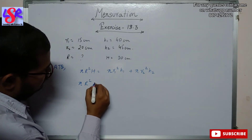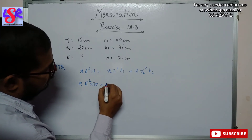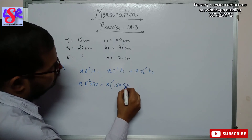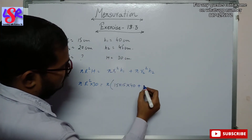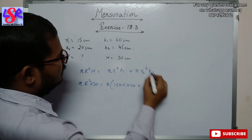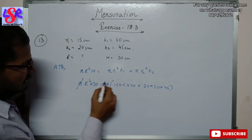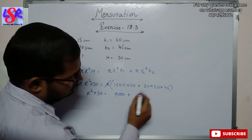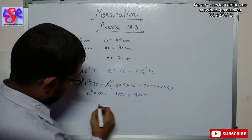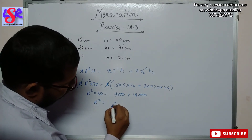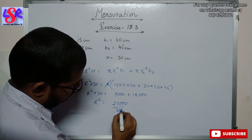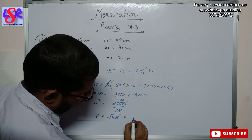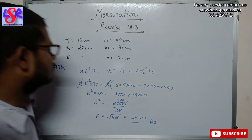We get R² × 30 = (15² × 40) + (20² × 45) = 9000 + 18000 = 27000. So R² = 27000/30 = 900. Therefore R = √900 = 30 cm as the radius of the larger container.